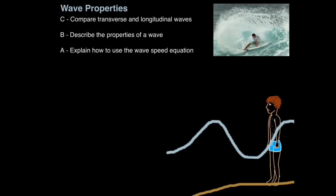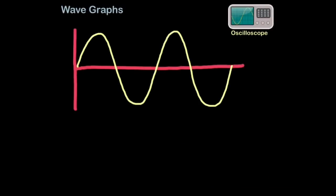So that is how you compare transverse and longitudinal waves. Remember, transverse particles are disturbed up and down, longitudinal back and forth. So now let's understand the properties of a wave by looking at wave graphs.